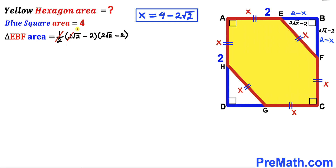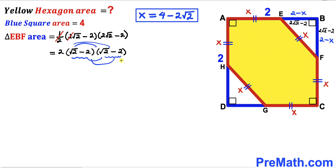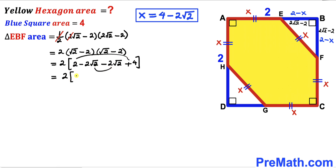So the area of triangle EBF is ½ times (2√2 minus 2) times (2√2 minus 2). Multiplying these two factors by double distribution and combining like terms, we get 2 times (6 minus 4√2), giving a triangle EBF area of 12 minus 8√2.